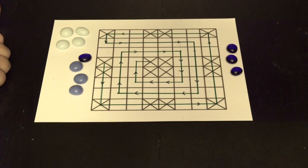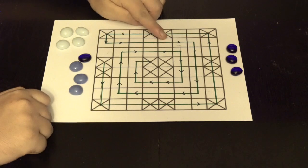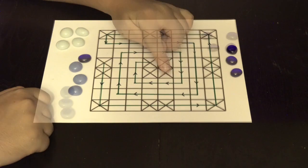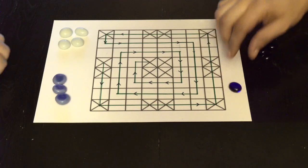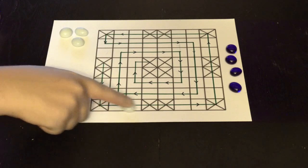To play, you'll need to print the Ashtapada game board and draw in the path using markers. You'll also need four light and four dark game pieces for two players and three two-sided dice, mancala beads, or coins. Your choice.